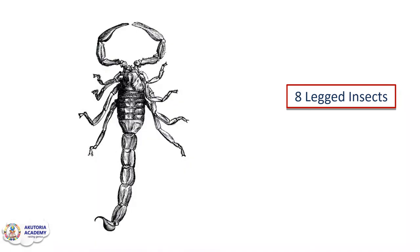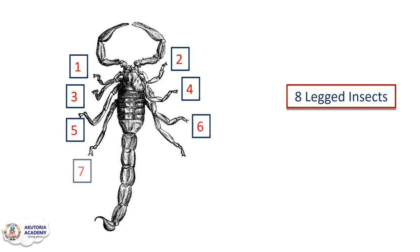Let's see how many legs these insects have — one, two, three, four, five, six, seven, and eight. This insect is an eight-legged insect. So in the first example we saw an insect with six legs, and in this example we are seeing an insect that has eight legs. Some insects have six legs while others have eight legs — so we have the six-legged insect and the eight-legged insect.